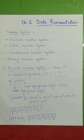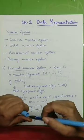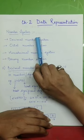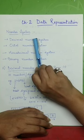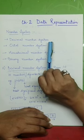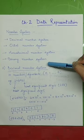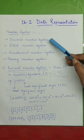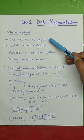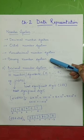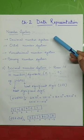Dear students, welcome to session 1 of chapter number 2, Data Representation. Now we will be studying about various types of number systems that we are going to use in our computer system. Numbers can be stored in different number systems. We will be studying about 4 number systems: decimal number system, octal number system, hexadecimal number system, and binary number system.